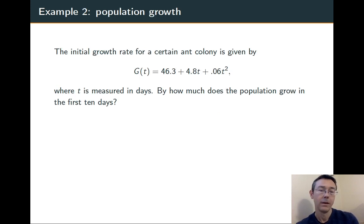Example 2. The initial growth rate for a certain ant colony is given by this function g of t, where t is measured in days. We'd like to know how much the population grows in its first 10 days.